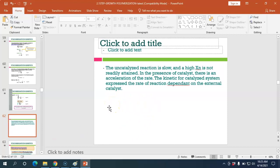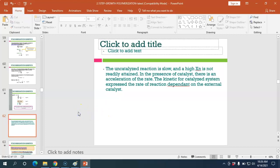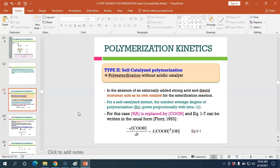The uncatalyzed reaction is slow and a high degree of polymerization is not readily attained. In the presence of a catalyst, there is an acceleration of the rate. The kinetics for a catalyzed system express the rate of reaction dependent on the external catalyst. When we add catalyst in the external system, it will increase the rate of polymerization. Now we look at self-catalyzed polymerization.